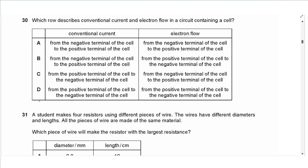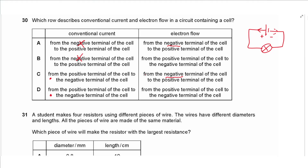Question 30: Conventional current flows out of the positive terminal; electrons flow out of the negative terminal. Combining: conventional current goes from positive terminal, electron flow goes from negative terminal. Answer is C.